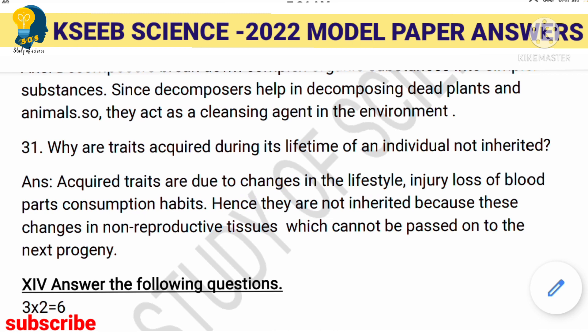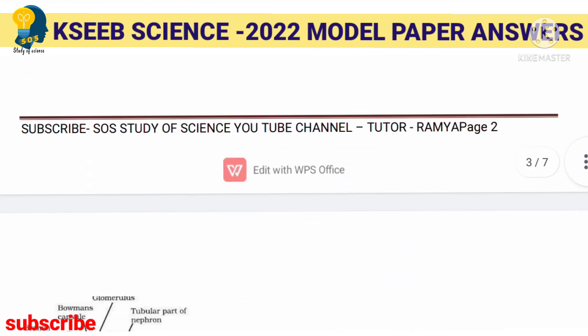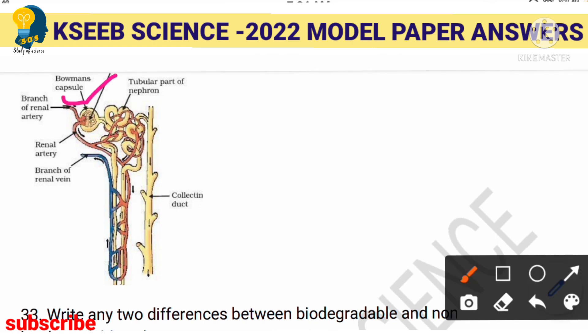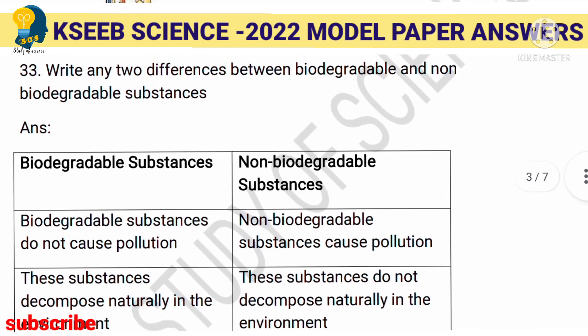The two-mark question: draw a diagram showing the structure of a nephron and label Bowman's capsule. For two marks you must draw the nephron and label only Bowman's capsule as asked.